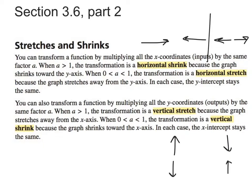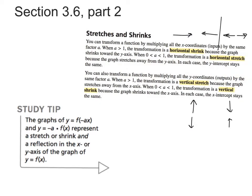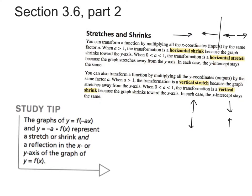You may be asking: what happens if we multiply by a negative? If you multiply by a negative, the graphs of y = f(−ax) and y = −a·f(x) represent a stretch or a shrink and a reflection. So it's going to be a stretch or a shrink, but the negative means you're also going to reflect it, either in the x-axis or the y-axis.